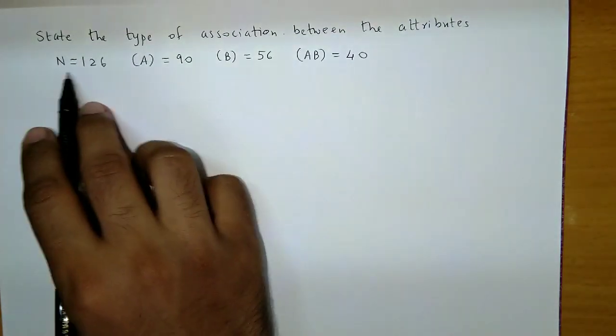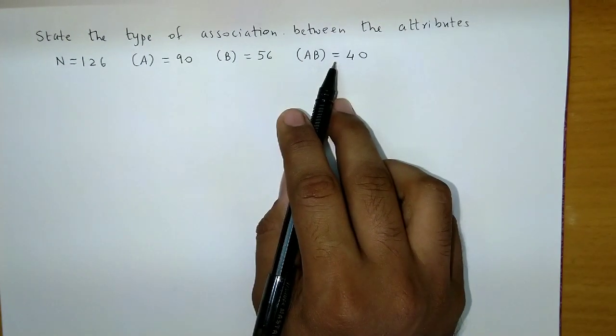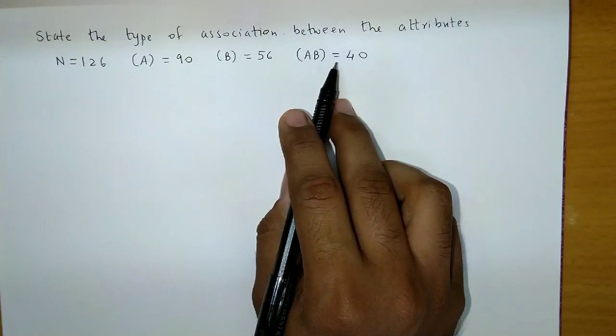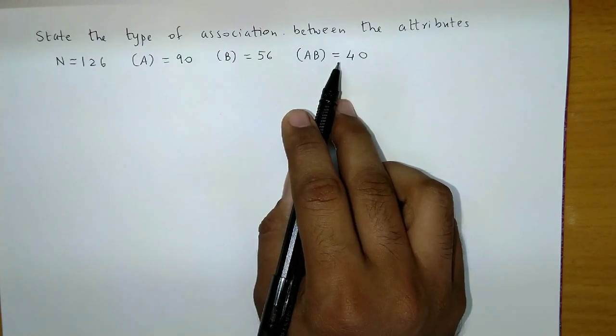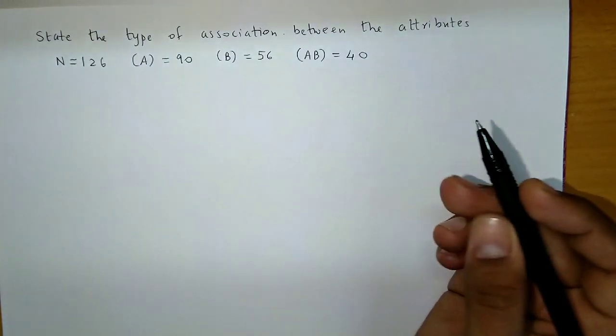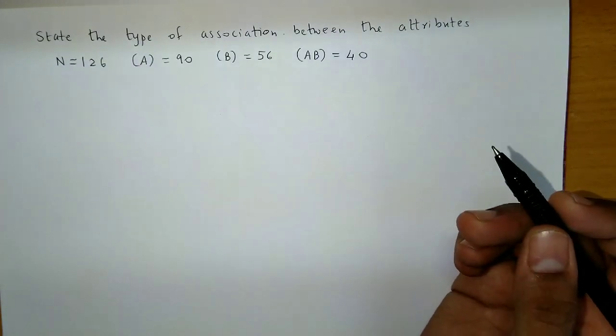Now, if you observe these values that are given, we can easily use the comparison method. Rather than going for Yule's coefficient, we can easily know the type of association using the comparison method.